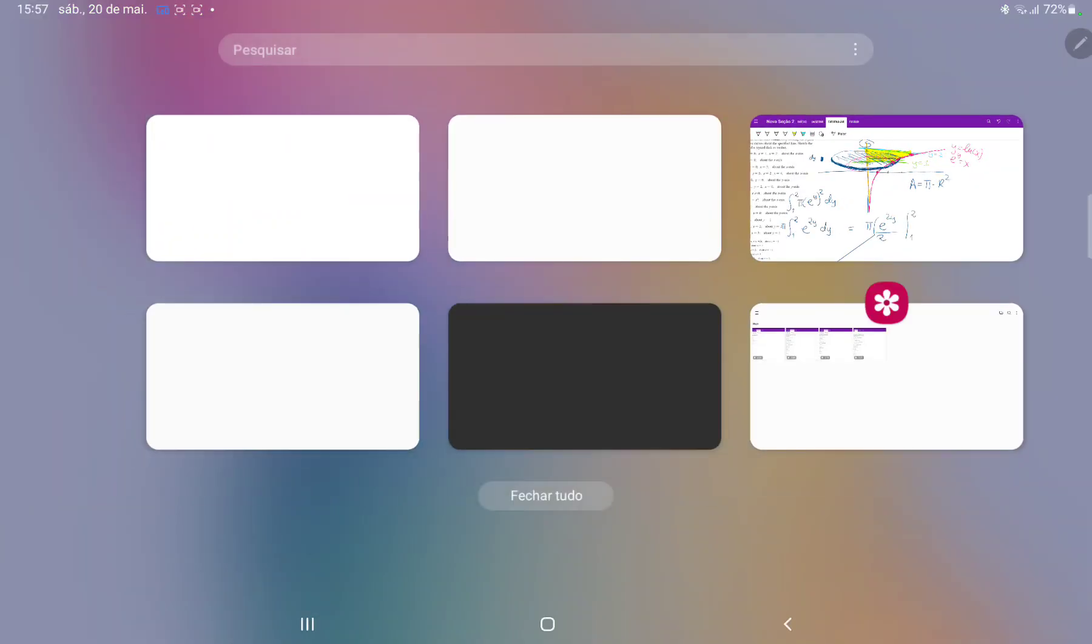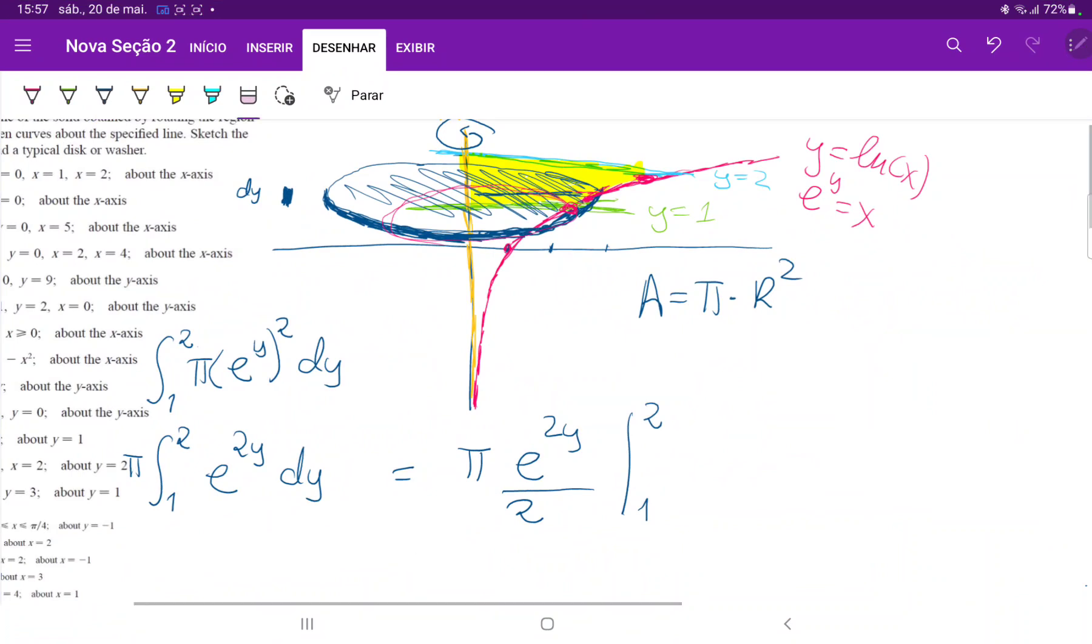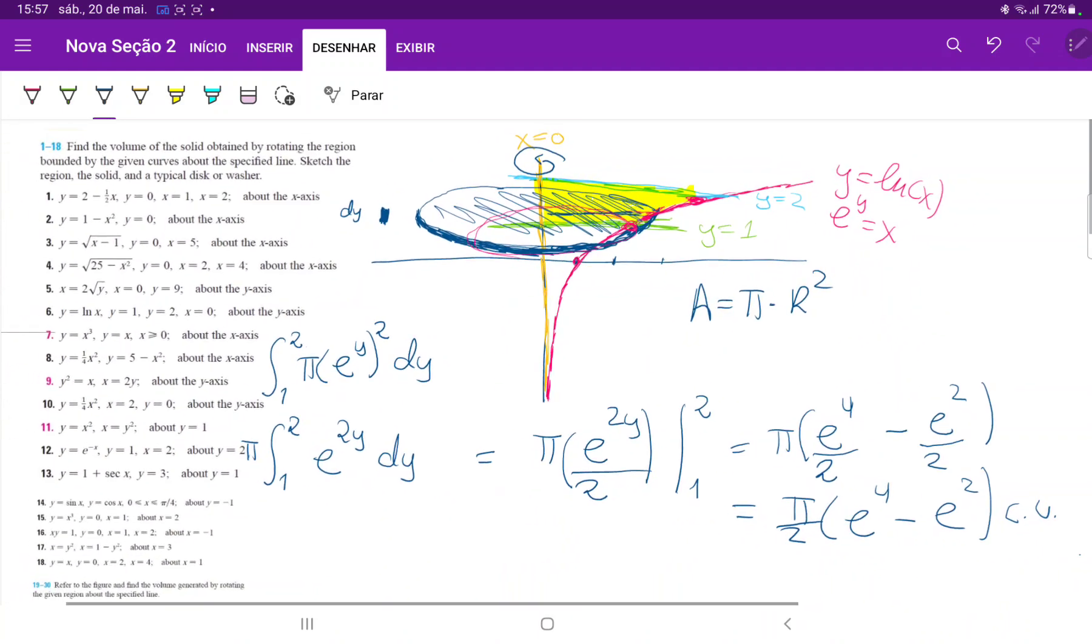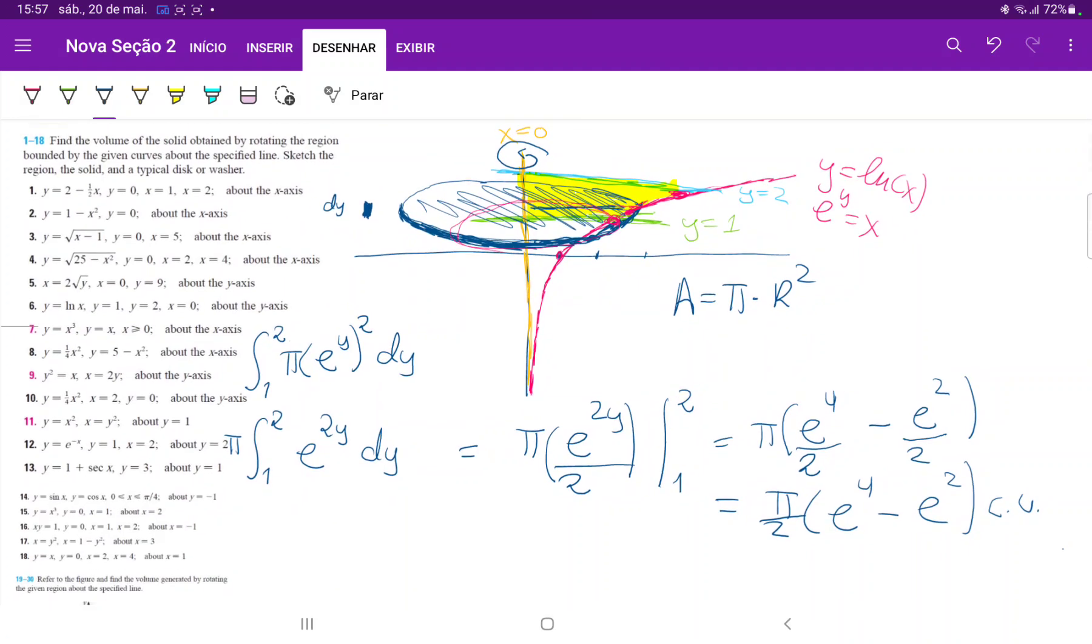So when we evaluate our boundaries here, this is going to be equal to π times e to the 4 over 2 minus e to the 2 over 2. So our final result is π over 2 times e to the 4 minus e to the 2 cubic units, since they don't give us any units. And that is the volume of when we take these disks and we sum them up, the area of these disks, and then we sum them up all the way from 1 to 2 on the y-axis.